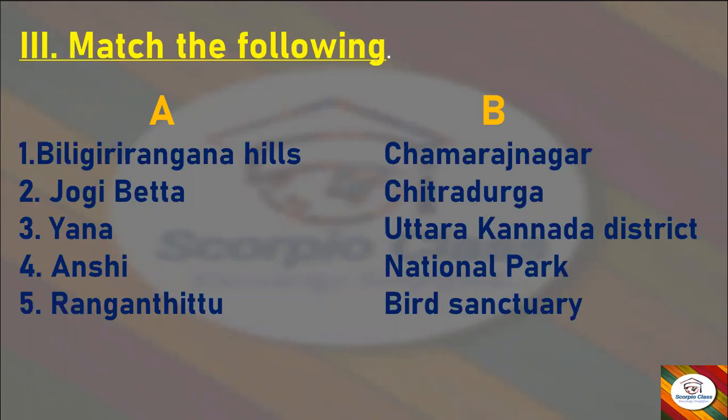Match the Following — Column A and Column B: Biligiri Rangana Hills — answer: Chamarajanagar. Jogi Betta — answer: Chitradurga. Yana — answer: Uttara Kannada district. Anshi — answer: National Park. Ranganathittu — answer: Bird Sanctuary.